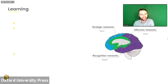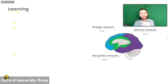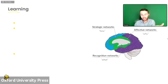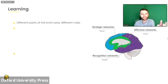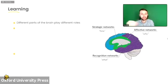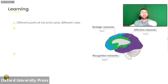Now we get to the third part: the "learning" in Universal Design for Learning. The whole framework is built around the idea that different parts of the brain play different roles. We won't go into a whole neuroscientific debate, but we'll use one model focusing on different networks in the brain and what they actually do. This is what UDL was based upon — three different networks involved in the whole learning process: the recognition networks, the strategic networks, and the affective networks.